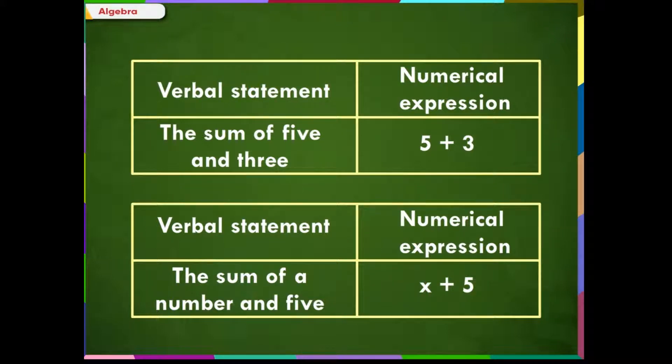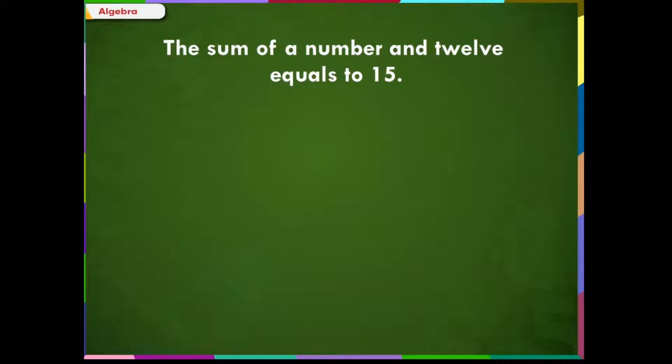The sum of a number and 12 equals 15. This can be written as: The sum of a number and 12 means x plus 12 equals 15. Now this is no more called an algebraic expression.